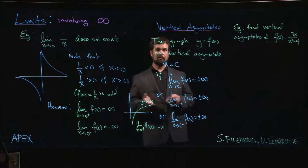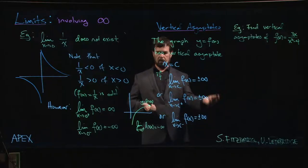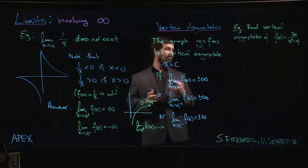So now that we've formally introduced this notion of a vertical asymptote and how it relates to infinite limits, we can look at a quick example.